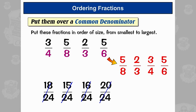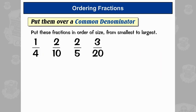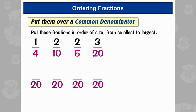Another example — it's exactly the same process. We have to find a common denominator, which is the smallest number that all of these denominators will go into, and that is twenty. To get from four to twenty, we times by five.